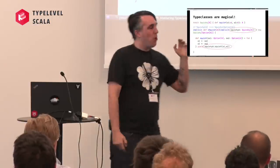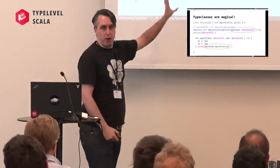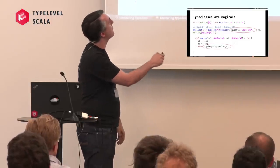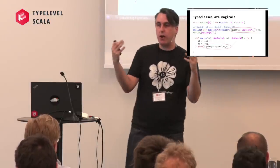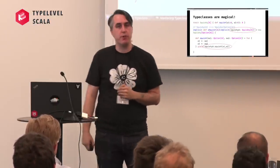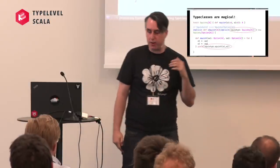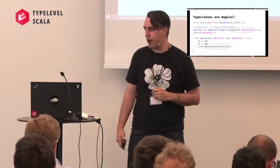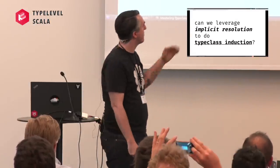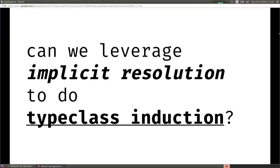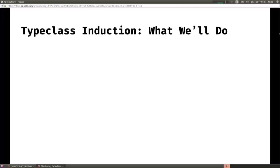When you're armed with this kind of power, where the compiler can generate these instances for you, it begs the question: can we do more interesting things with this? At one starry night I was wondering: can we leverage implicit resolution to do type class induction? And that's what I hope to convince you of today. We've talked about induction and type classes - we've now entered the realm of type class induction.